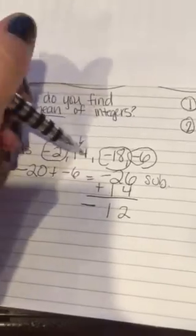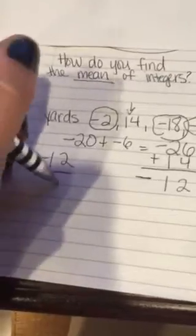Now let's add up the numbers. 1, 2, 3, 4. There are 4, so I have to take negative 12 and divide it by 4.